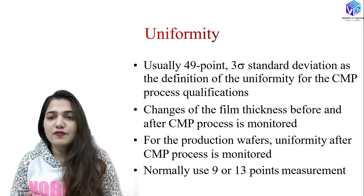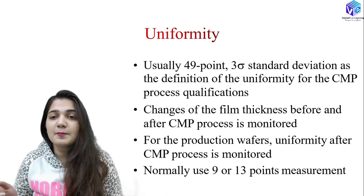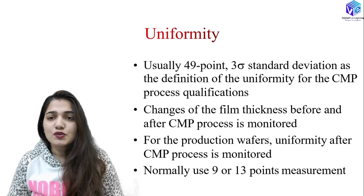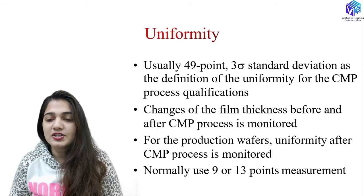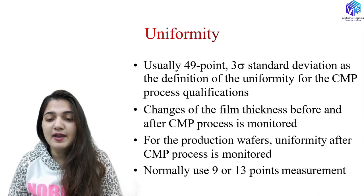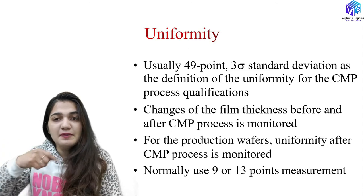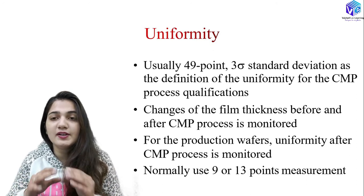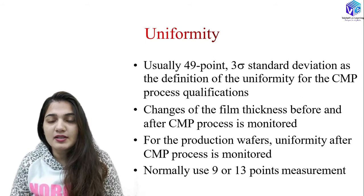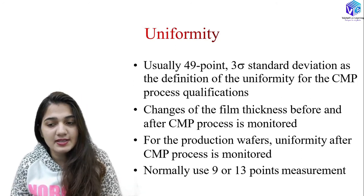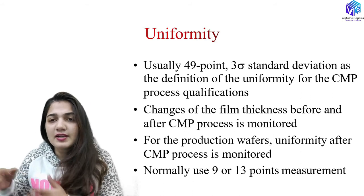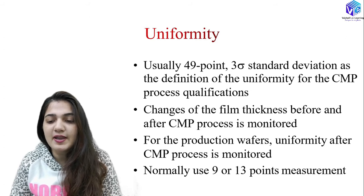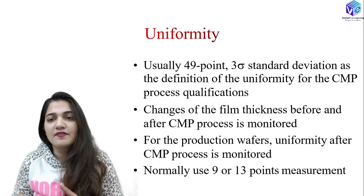Now coming to uniformity. Uniformity is measured by the various roughness values present on the wafer. A commonly used definition for CMP process qualification is the 49-point, 3-sigma standard deviation measurement. We take 49 points on the wafer, measure various parameters, and see the difference. If the difference is high, the wafer is not uniform. If the thickness is not changing much, the wafer is uniform or planar. Film thickness changes before and after CMP are monitored for uniformity.